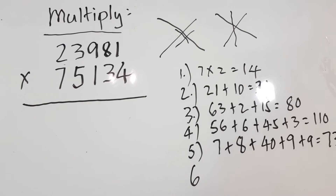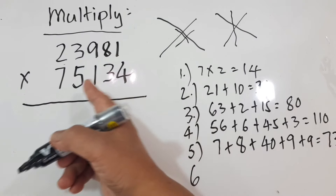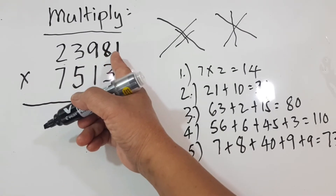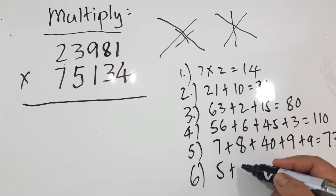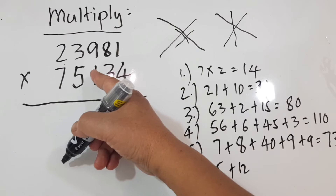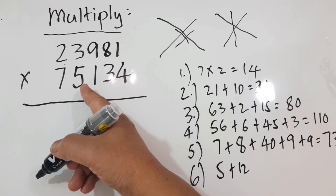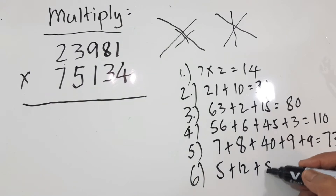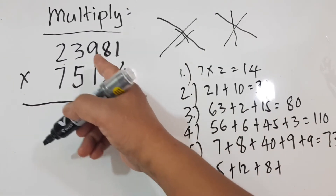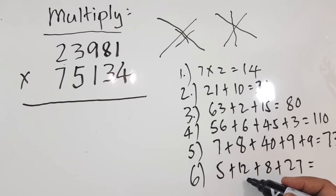Step 6: Now we start from here, because we've finished the previous steps. 5 times 1 is equal to 5, 4 times 3 is equal to 12, then 1 times 8 is equal to 8, and 3 times 9 is equal to 27. So this equals 5 plus 12 is 17, plus 8 is 25, plus 27 is equal to 52.